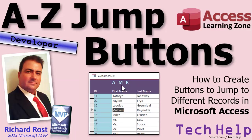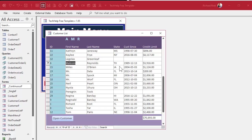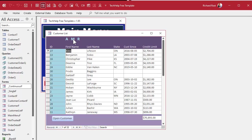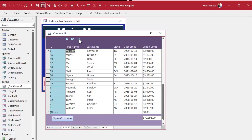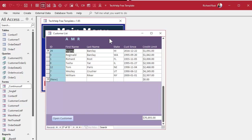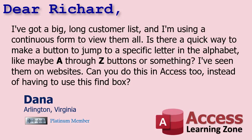Welcome to another tech help video brought to you by AccessLearningZone.com. I'm your instructor Richard Ross. Today I'm going to show you how to make little buttons or labels to jump between the different records in your customer table by the first letter of their name. So you click on the M button, it jumps to the first M customer, and so on.